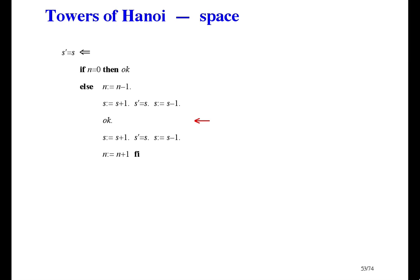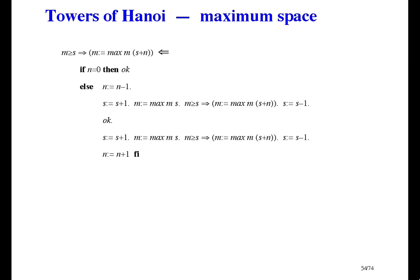One thing we really do want to know is, what is the maximum space ever used during the computation? Because, that tells us whether we have enough memory. We need variable m to keep track of the maximum space ever used. And, wherever s is being increased, we need m gets max of m and s, in case it's a new maximum. We don't need anything where s is being decreased.